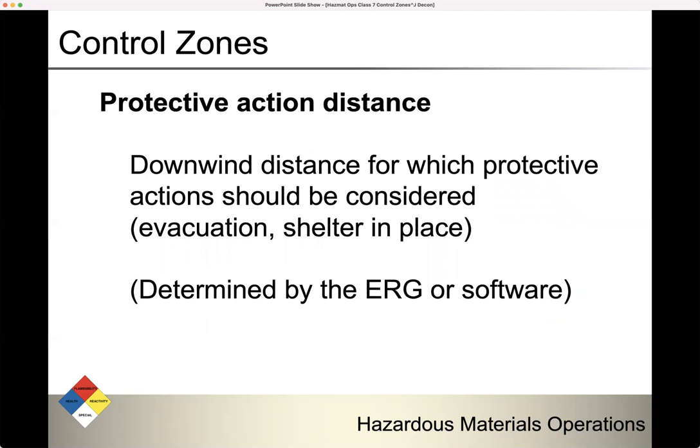Protective action distance: we started talking about this when we learned how to use the Emergency Response Guidebook. The protective action distance is the downwind distance for which protective actions should be considered. Protective actions are either evacuation or shelter in place. Use the ERG or some modeling software to determine that. This is downwind from the source, and then half that distance on both sides. That's your protective action distance. You need to decide whether to evacuate or shelter in place.